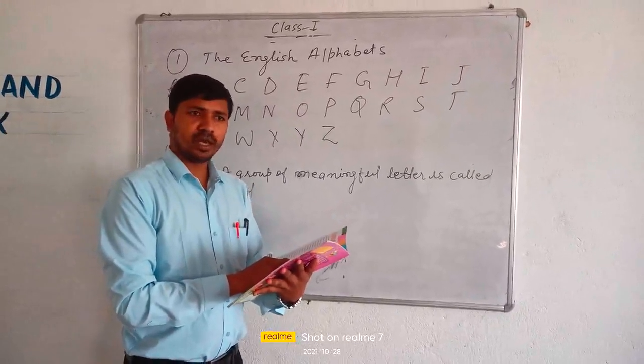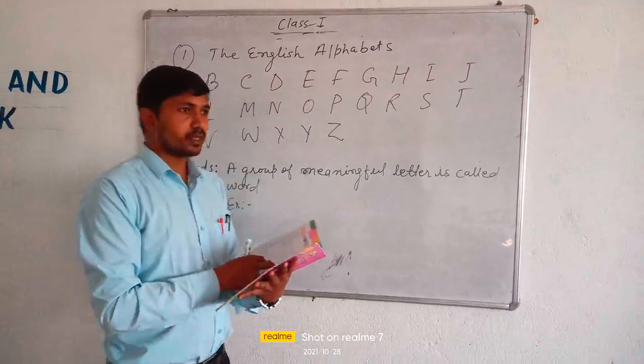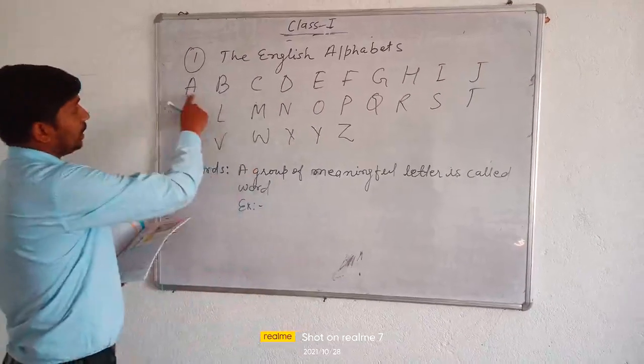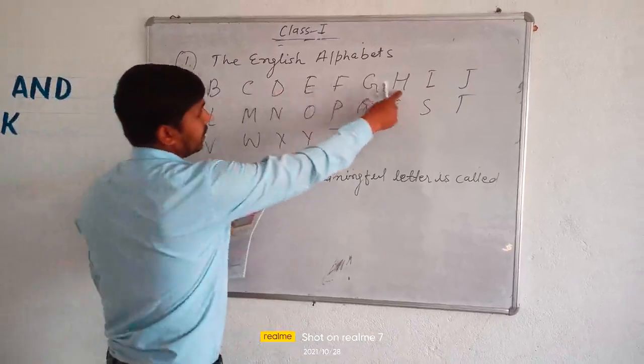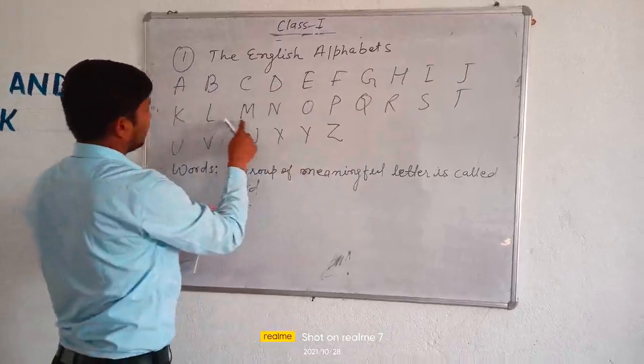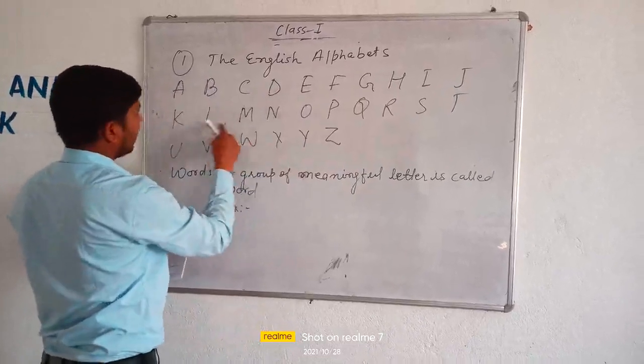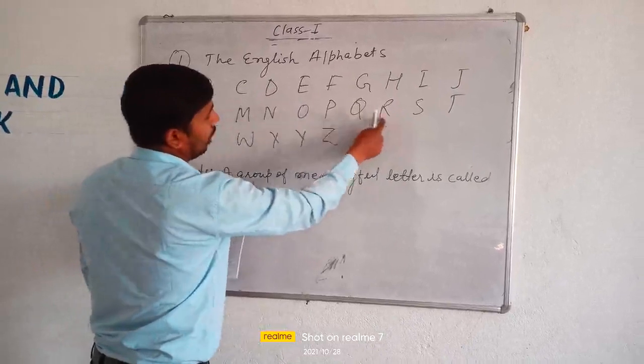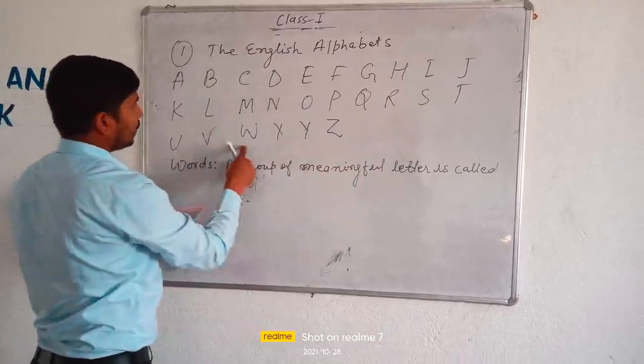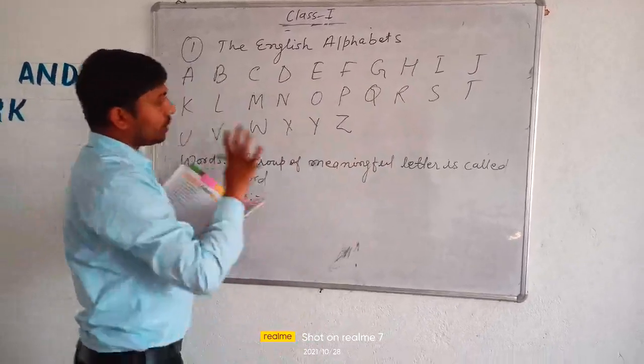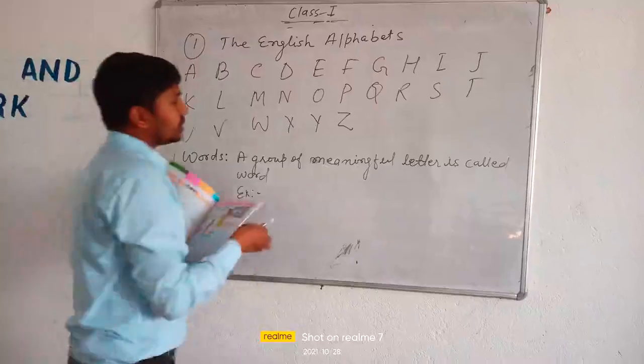As we know, the alphabet: A, B, C, D. Let's read what is written here. A, B, C, D, E, F, G, H, I, J, K, L, M, N, O, P, Q, R, S, T, U, V, W, X, Y, Z. These are the alphabet. There are 26 alphabets.